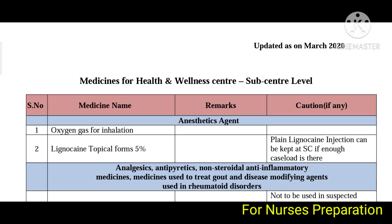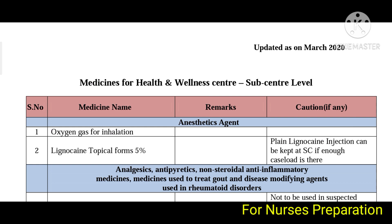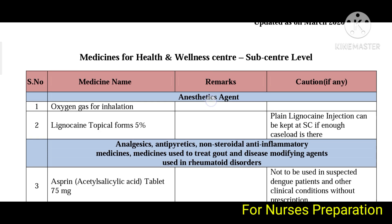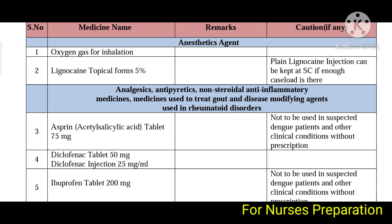The list shows medicine name, remarks, and other details. First are anesthetic agents: oxygen gas for inhalation and lignocaine topical forms 5%. Next are analgesics for pain relief and antipyretics to treat fever — non-steroidal anti-inflammatory medicines (NSAIDs), medicines to treat inflammation, gout, and disease-modifying agents used in rheumatic disorders.